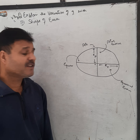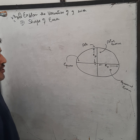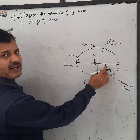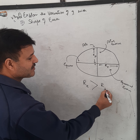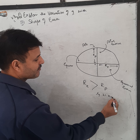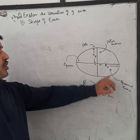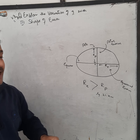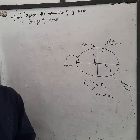In case of earth, the equatorial radius is always greater than the polar radius by 21 km.